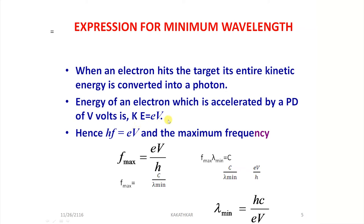As a special case, when the entire kinetic energy is converted into x-radiation, the energy of that x-radiation equals E = hf, where h is Planck's constant and f is the frequency. Under this condition we equate hf = eV, giving f_max = eV / h. Using the relation f_max × λ_min = c (the velocity of the radiation), we get f_max = c / λ_min. Equating the two expressions gives c / λ_min = eV / h, which is the expression for the minimum wavelength of x-rays produced in the tube.